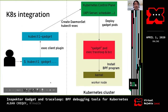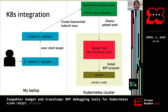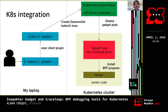How does it work? I mentioned I don't want developers to SSH onto nodes. Inspector Gadget is a CLI command I run on my laptop, and it won't SSH on nodes — it uses Kubernetes native objects like creating a DaemonSet, a pod, or ConfigMap. It only talks to the Kubernetes API server, and from there some pods are deployed to run the BPF program. For example, the TraceLoop process runs in a so-called gadget pod and installs a BPF program in the kernel.